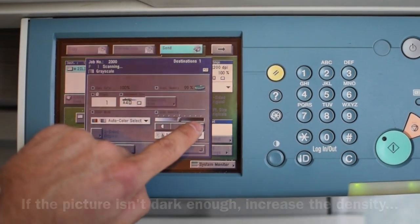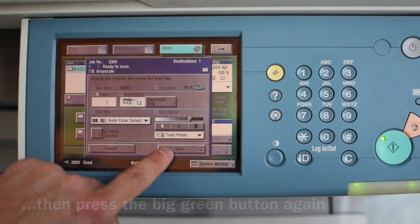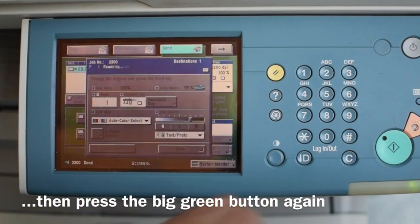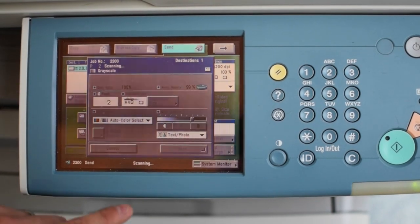Pro tip! If you would like to change the density of the scan, that's how dark it is, then you can change it with these buttons. Once you've selected your density, you need to press the green button again.